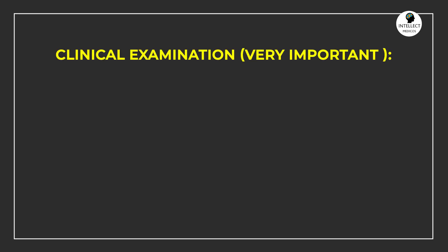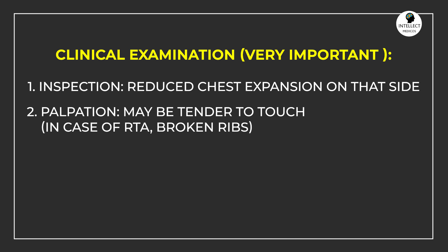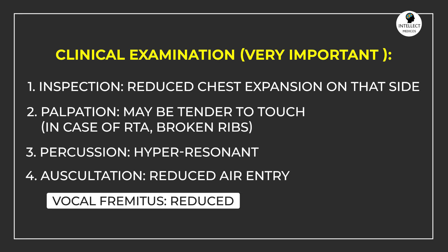For clinical signs, these patients can have increased respiratory rate — tachypnea — and tachycardia. On clinical examination: on inspection there will be reduced chest expansion on the affected side. On palpation, there may be broken ribs in trauma cases with tenderness over that area. On percussion, there will be a hyper-resonant sound. On auscultation, there will be reduced air entry, and the vocal fremitus test will also be reduced.